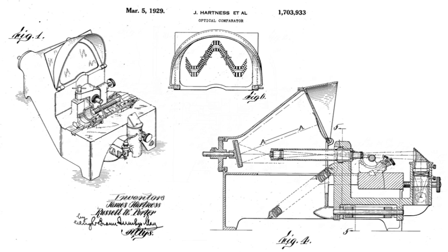The measuring happens in any of several ways. The simplest way is that graduations on the screen, being superimposed over the silhouette, allow the viewer to measure as if a clear ruler were laid over the image.